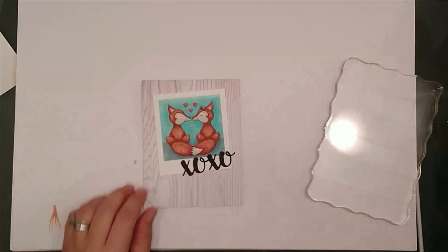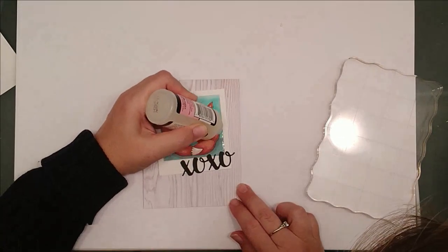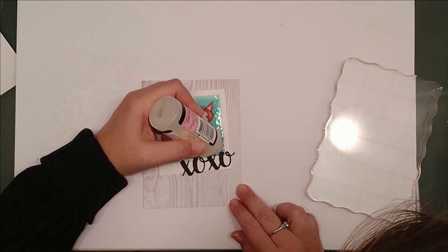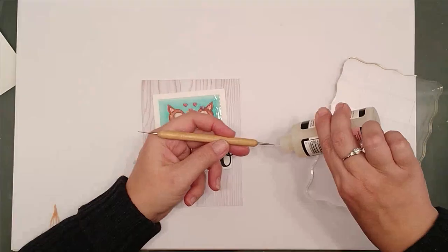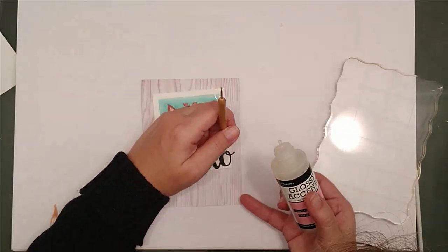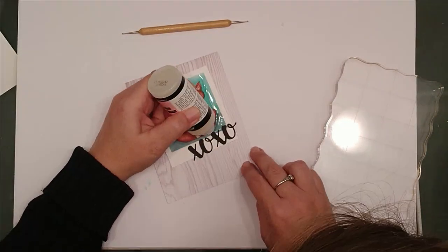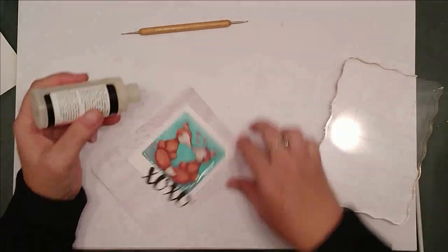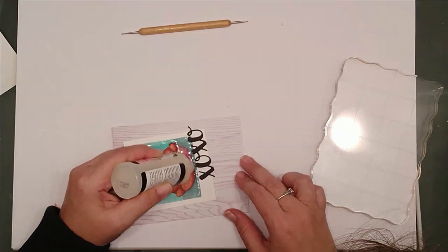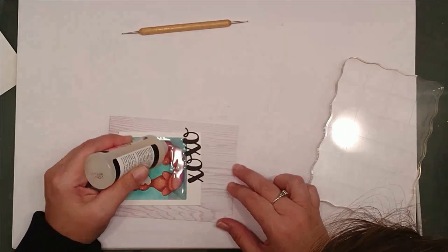You'll see me sign the back of the card here before I add the glossy accents. Whenever I use this much glossy accents I really try to make it the very last thing I do to the card so I don't smear it. And the reason I didn't cut that fox with the square die was so that I would have a little bit of a well with the frame on top. Worked out nicely.